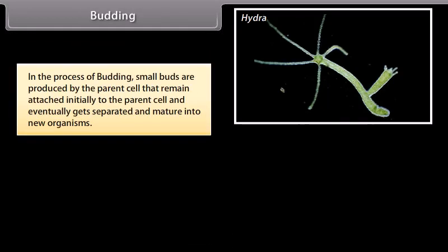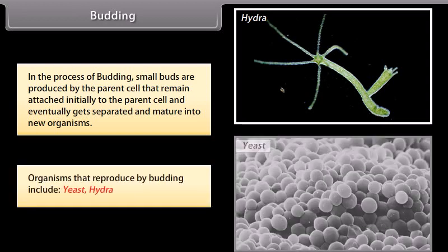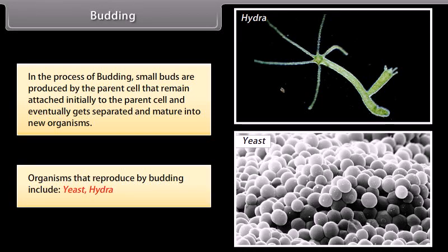In the process of budding, small buds are produced by the parent cell that remain attached initially to the parent cell and eventually get separated and mature into new organisms. Organisms produced by budding include yeast and hydra. The following diagram shows the bud developing on the parent hydra.